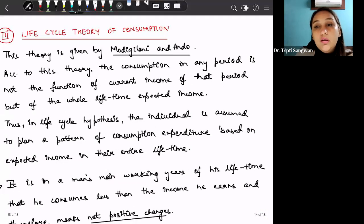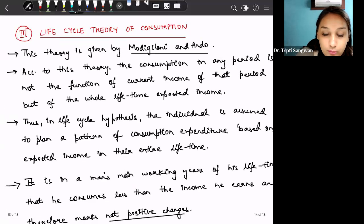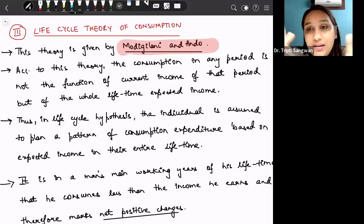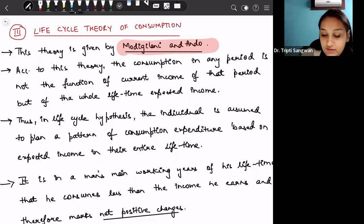So this theory was put forward by Modigliani and Ando. According to this theory, the consumption in any period is not the function of the current income of that period. Instead, an individual plans his entire lifetime consumption based on the entire lifetime expected income. Thus, in life cycle, the individual is a consumer based on how much income he will generate in his entire lifetime and how he will allocate that income in his entire lifetime.